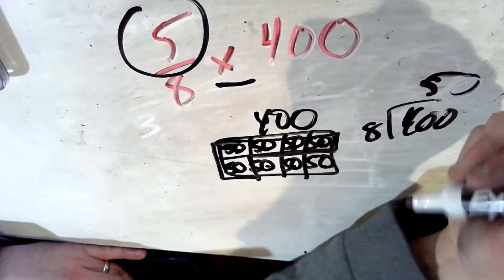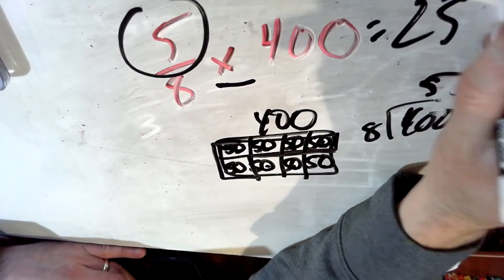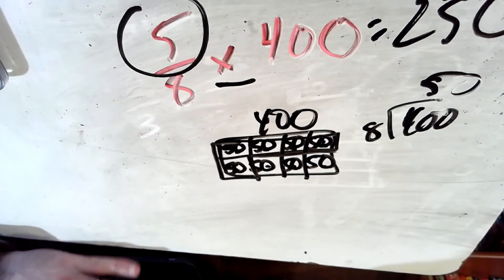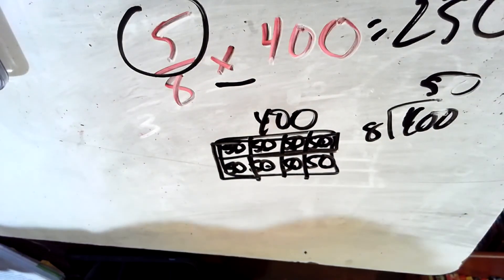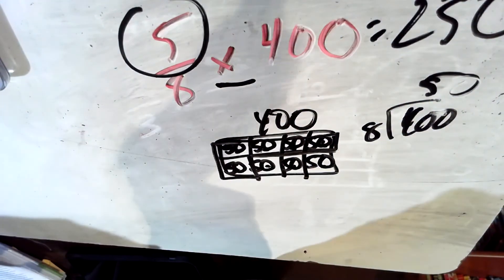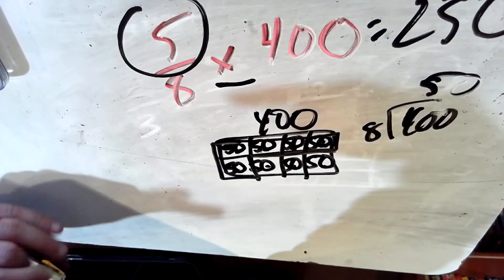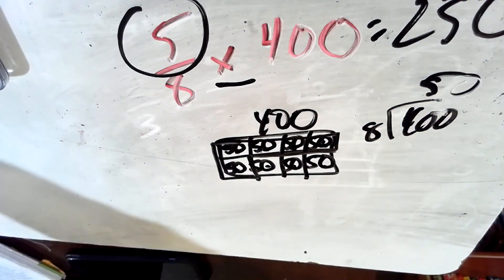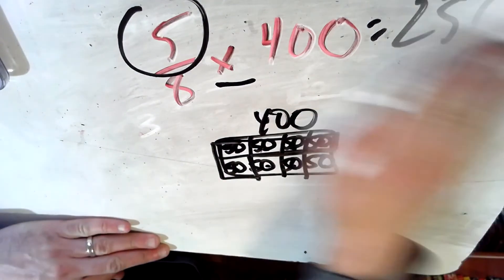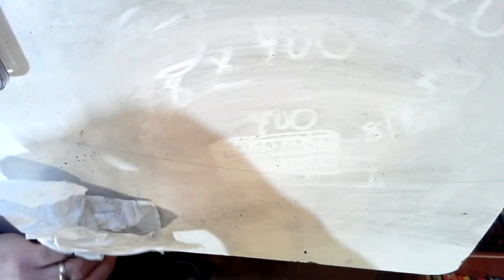So 1 eighth of 400 is 50. 5 of those eighths, 50, 100, 150, 200 is 250. So 5 eighths of 400 has to be 250. Because 1 eighth of 400 was 50. 5 of those eighths would be 250. And that makes sense. 4 eighths is half. Half of 400 is 200. 5 eighths would be a little bit more than half. 250 is a little bit more than 200.